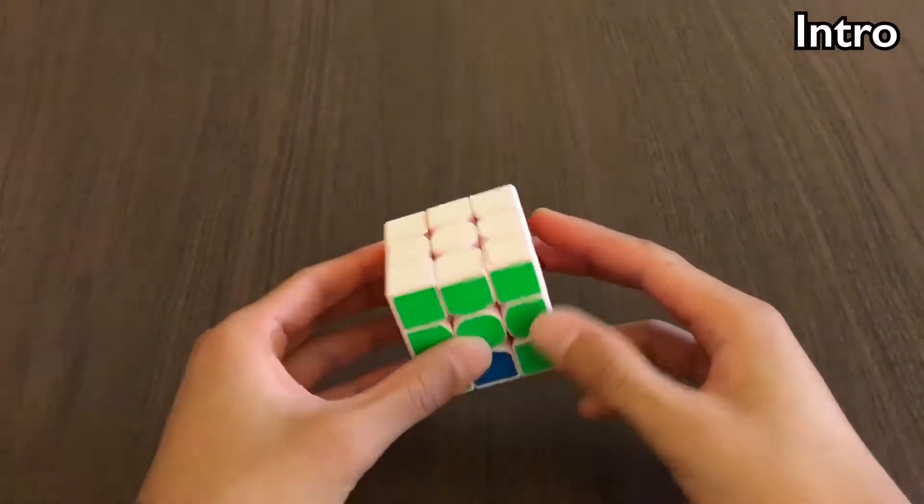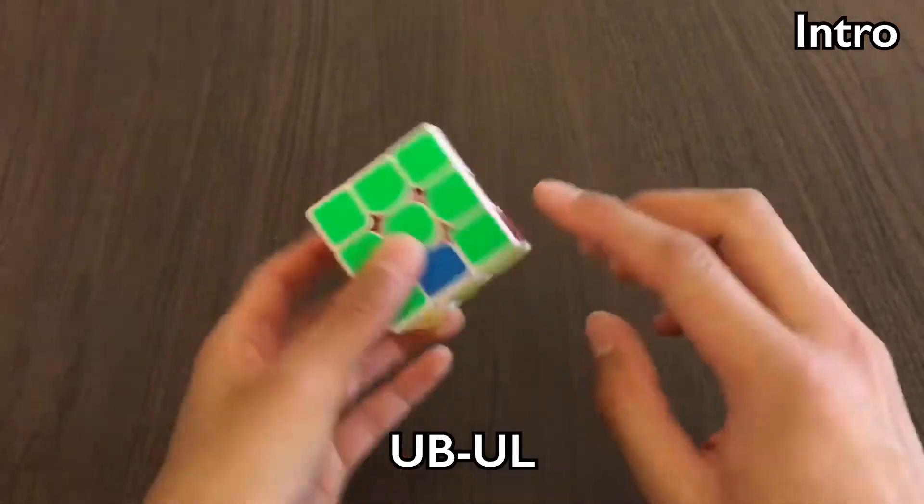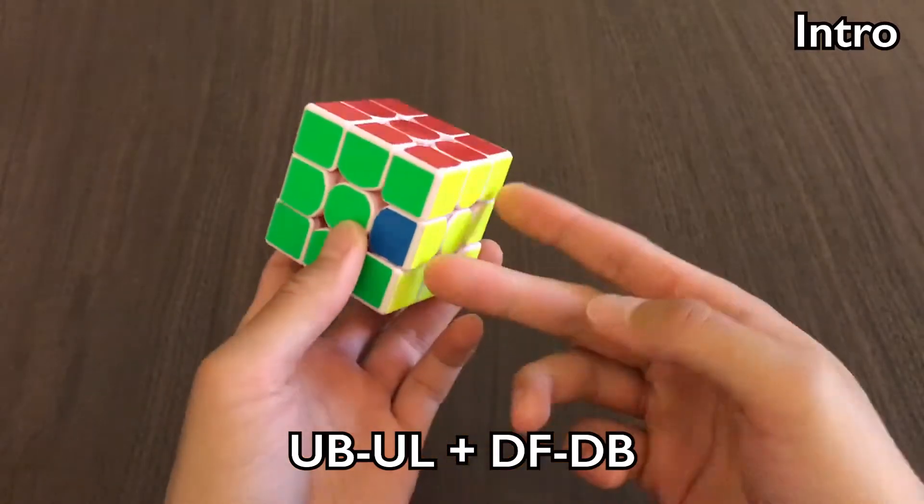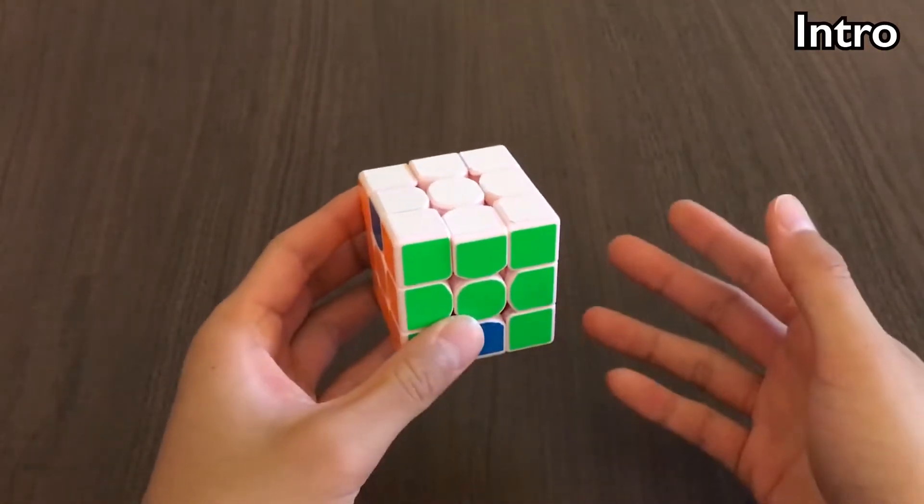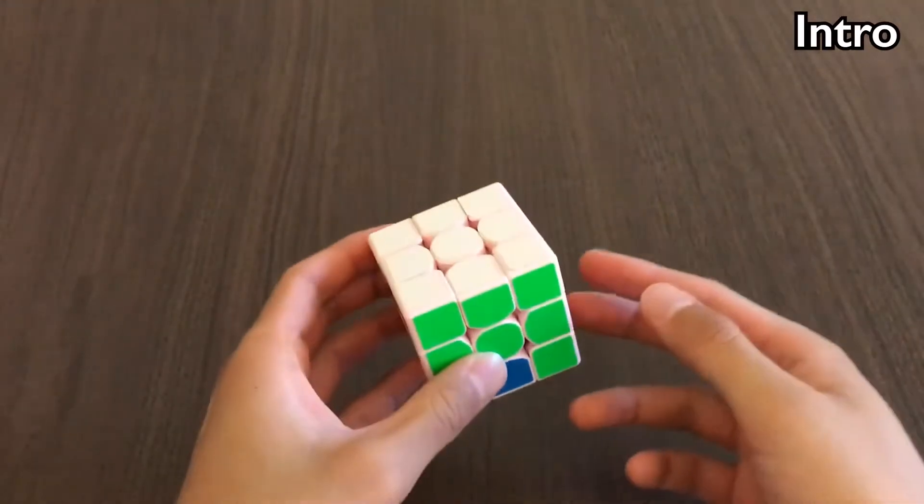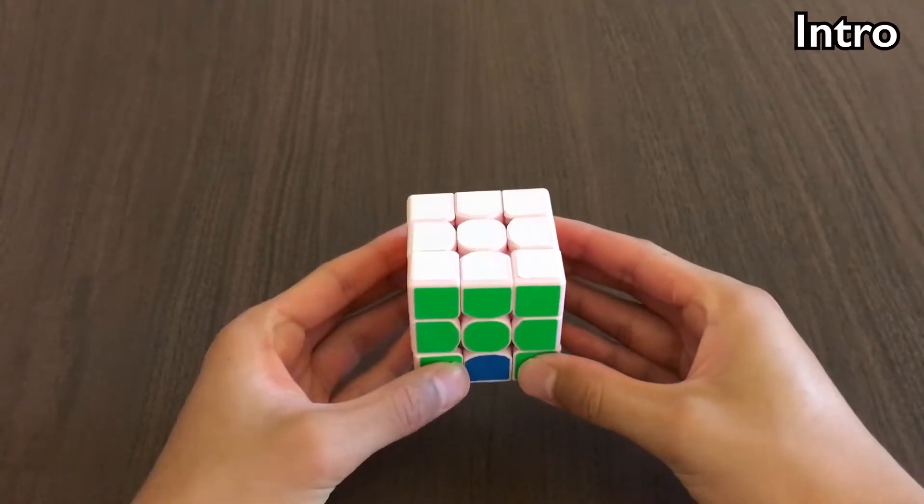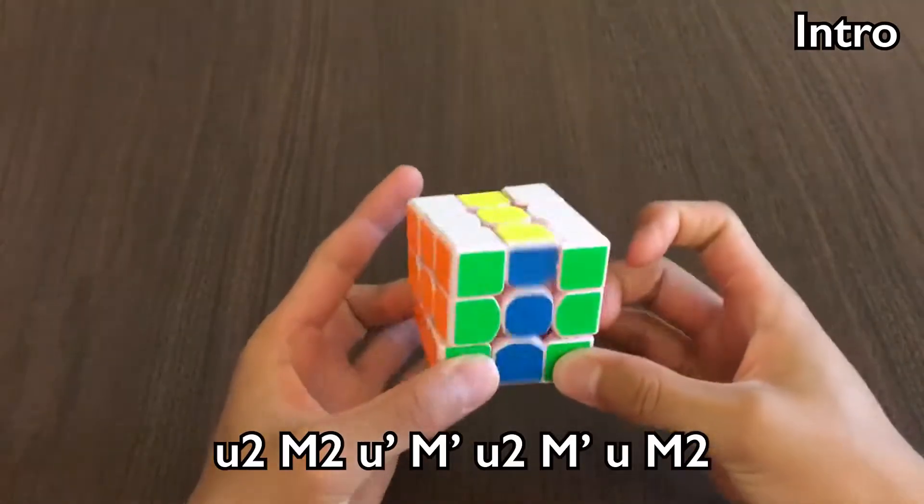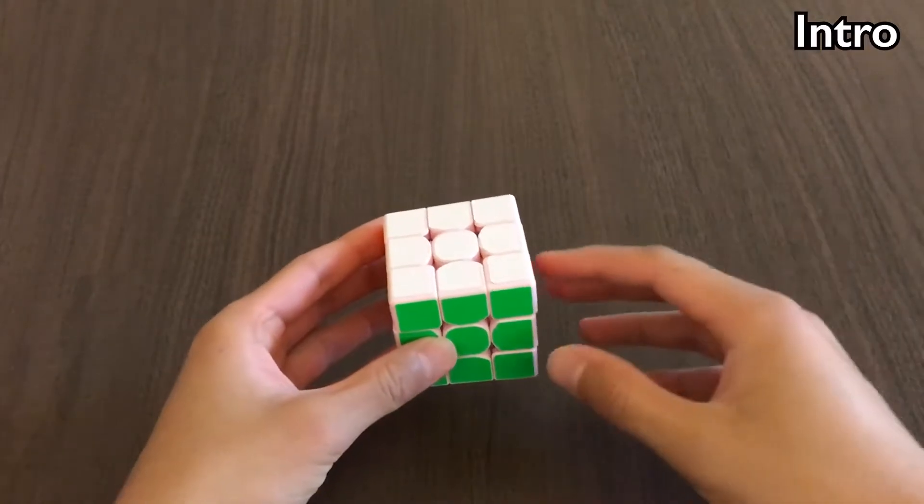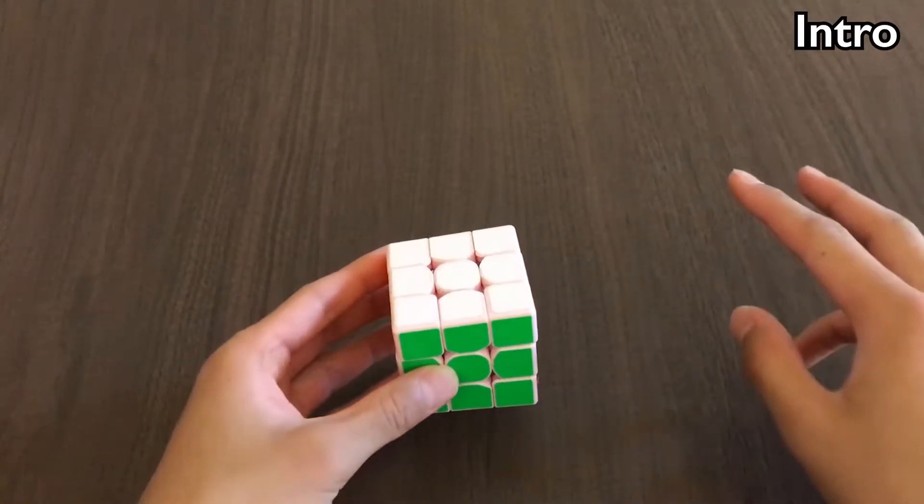An example of that is something like this. We can see that UB and UL need to be swapped with each other, and DF and DB also need to be swapped with each other. In other words, two edges need to be swapped with each other, and another two need to be swapped with each other. That's why it's called two-edge, two-edge swap. We can solve this with one alg. That's basically what 2E2E is. It's a 22 alg subset that swaps two edges and another two edges.